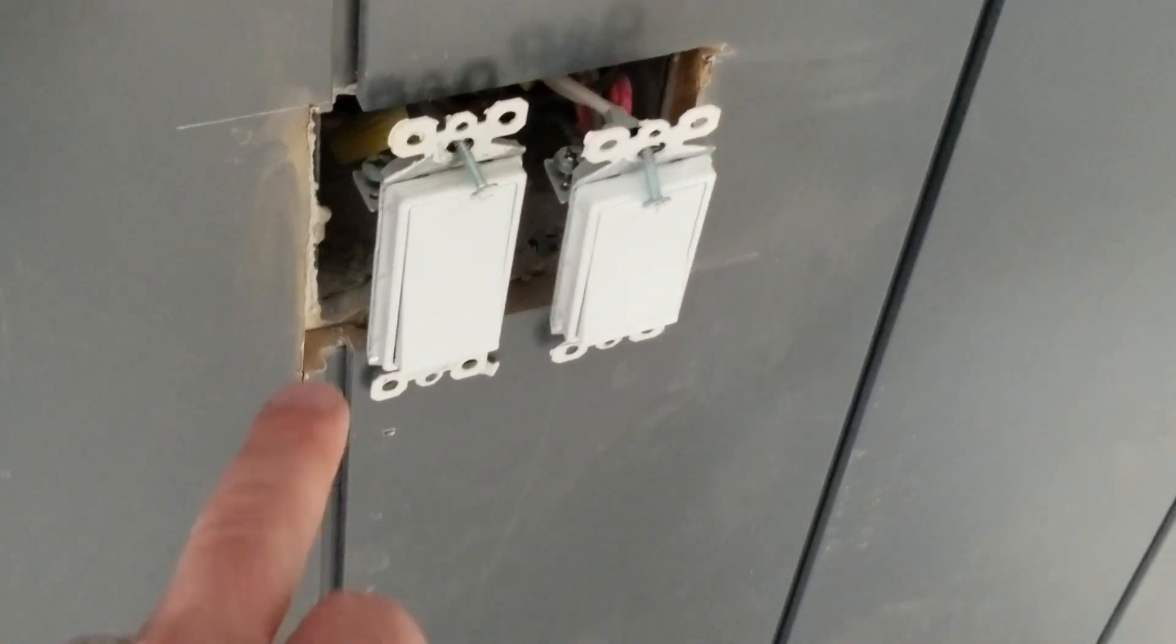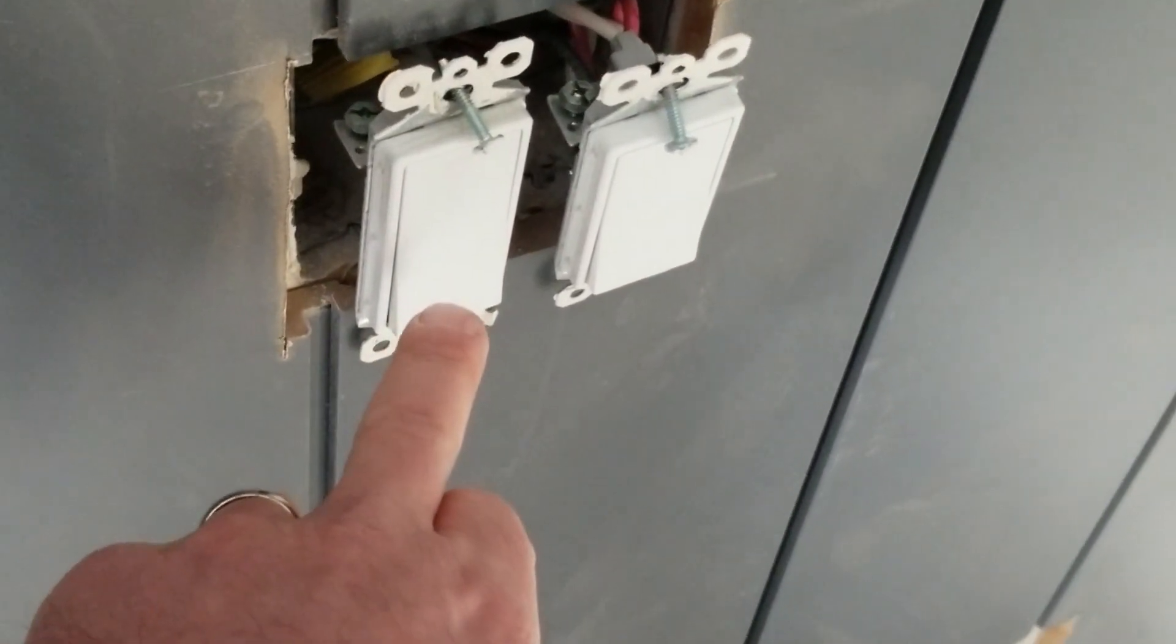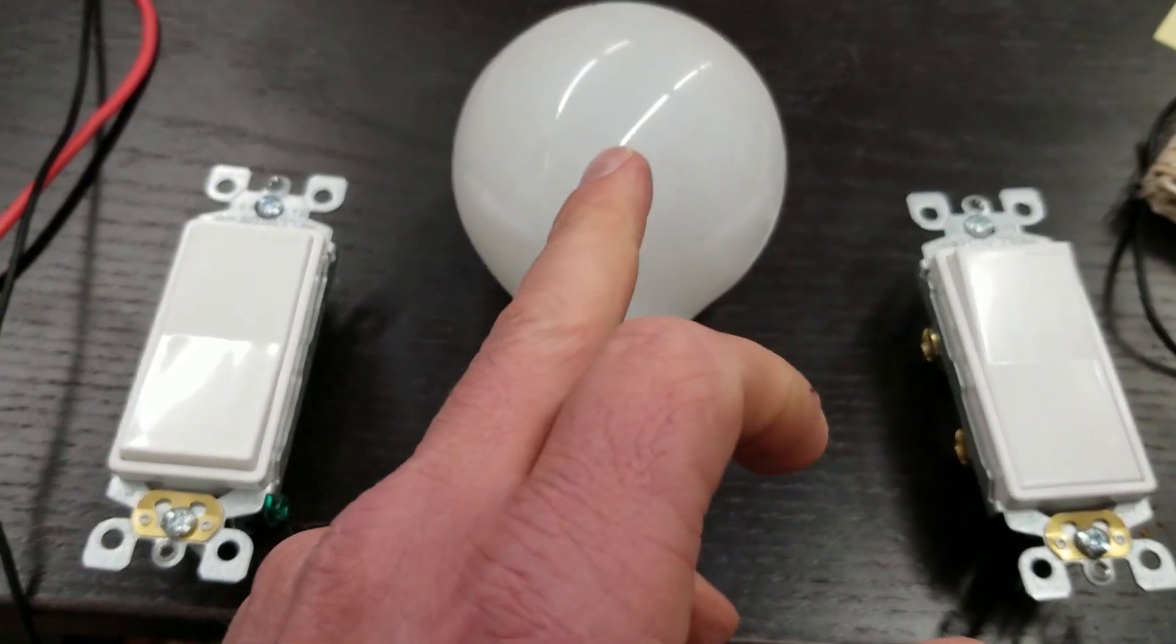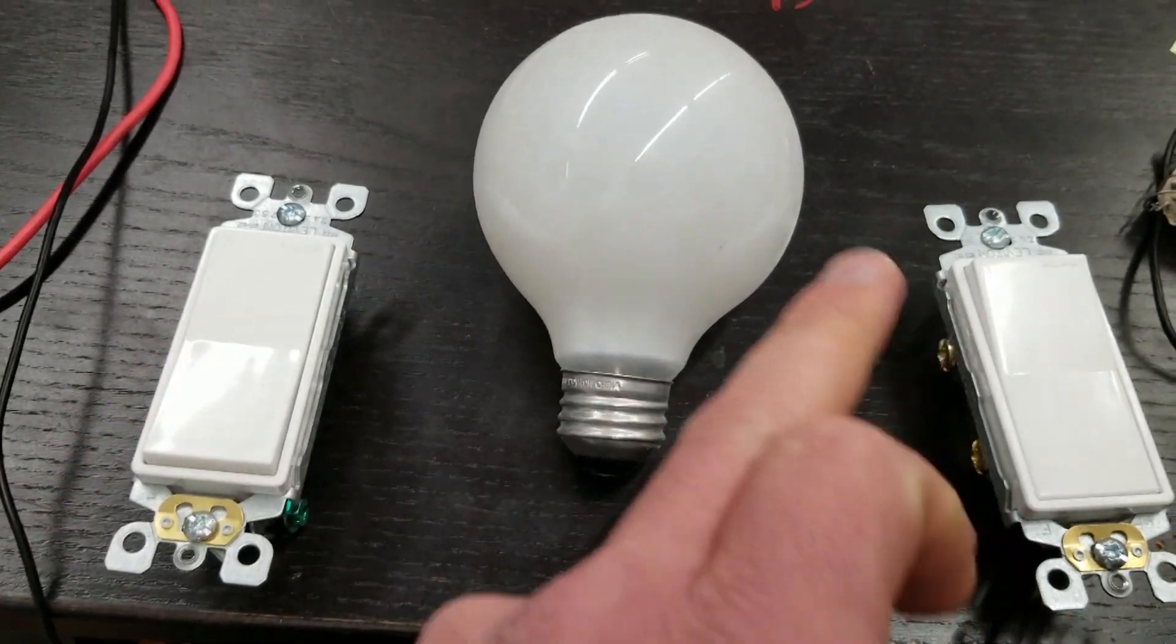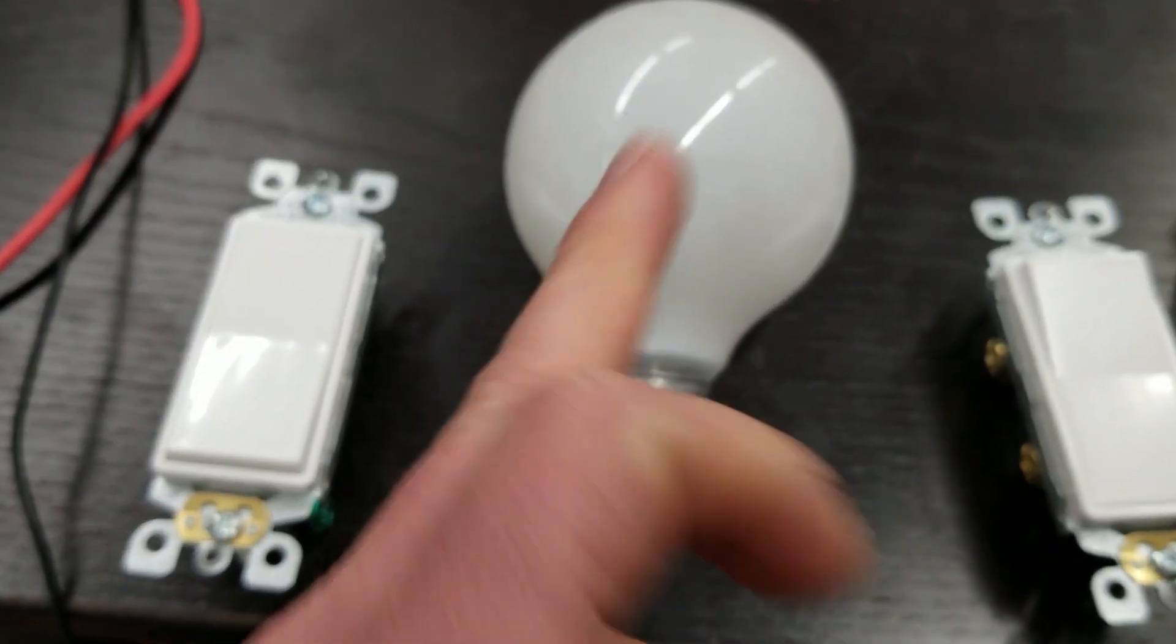As much as the 13 year old boy in me figures it'd be hilarious to light baby doll up like a Christmas tree, I'm gonna show you how to wire up a three-way switch - that is, two switches control one lighting circuit.